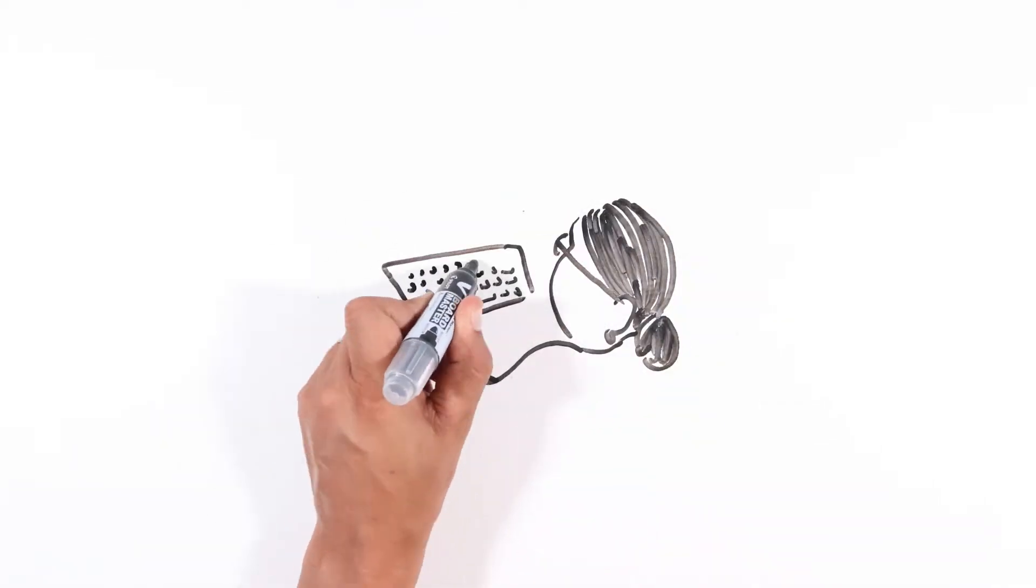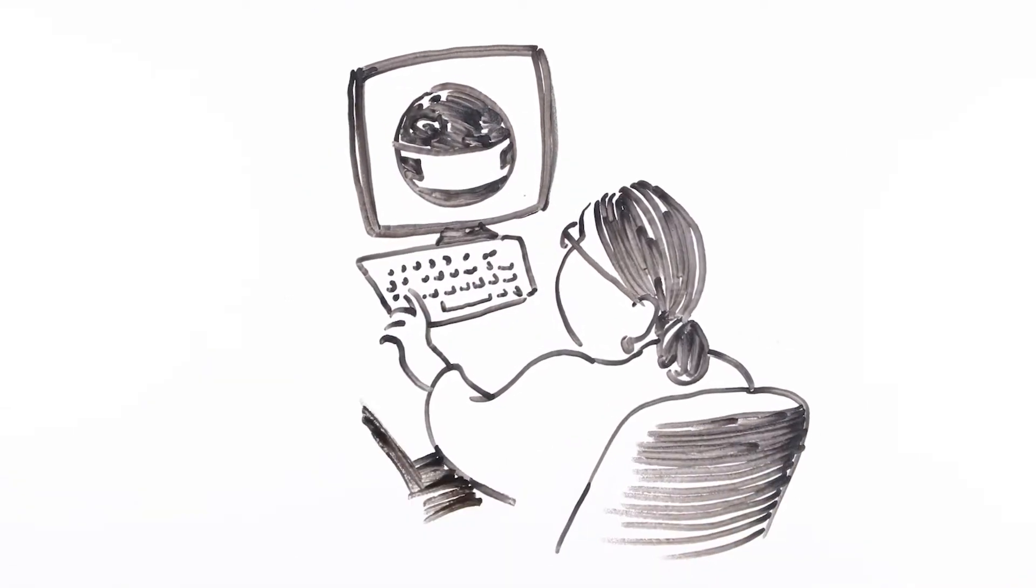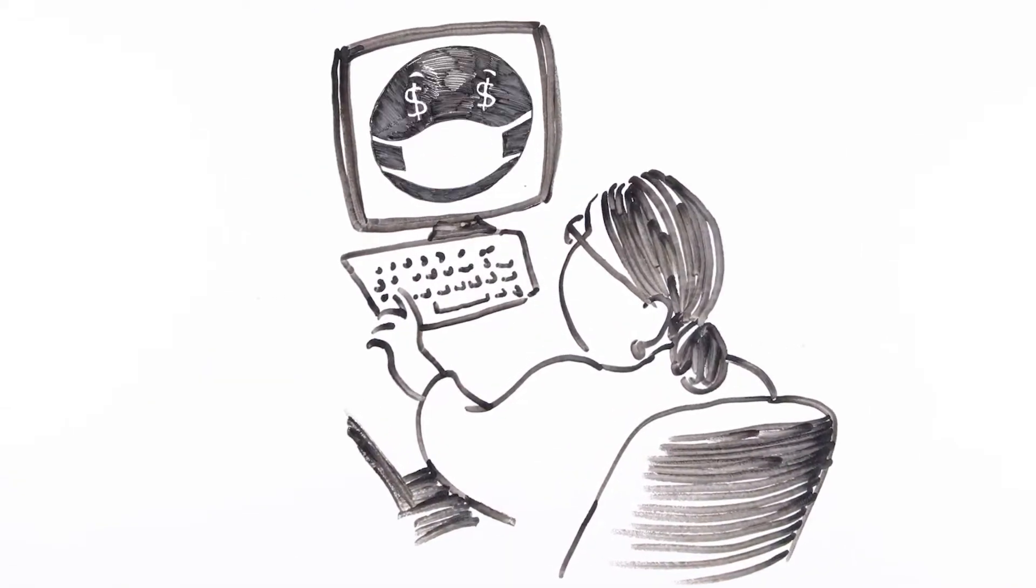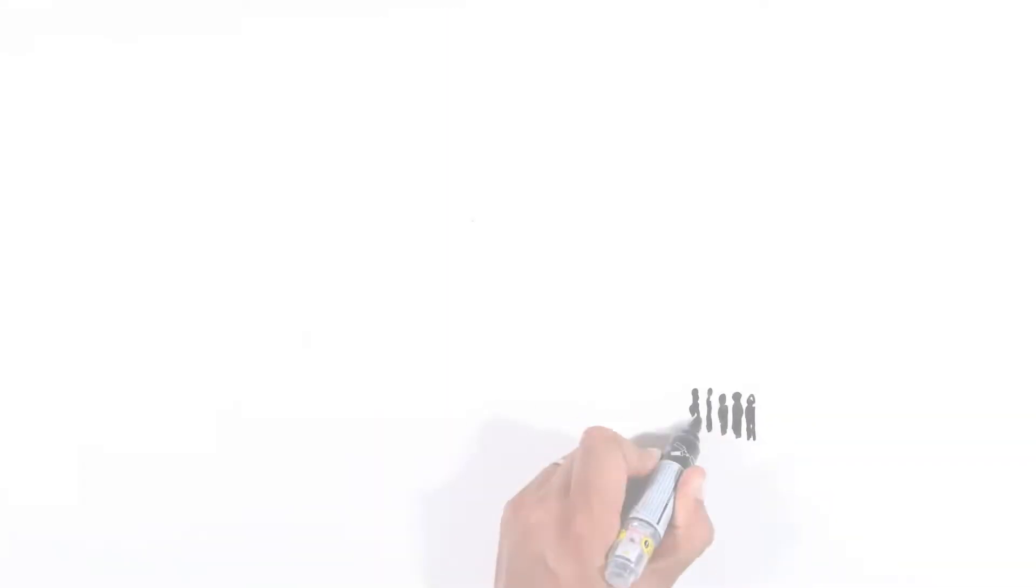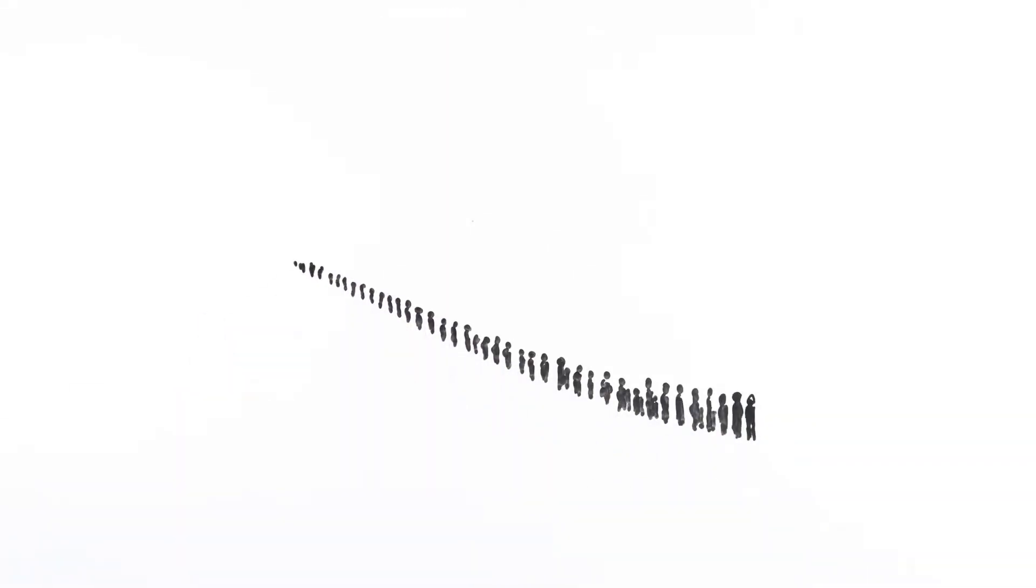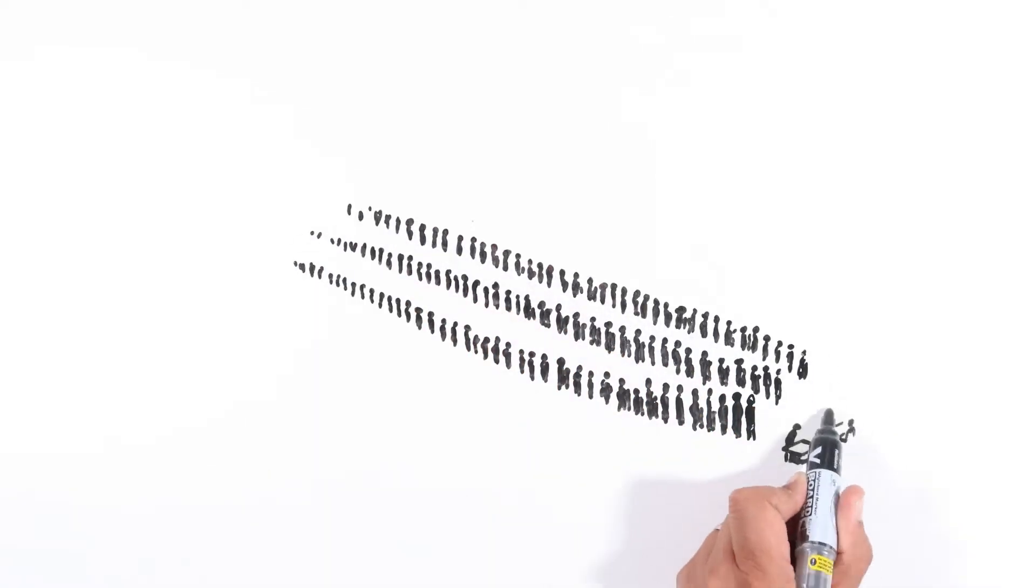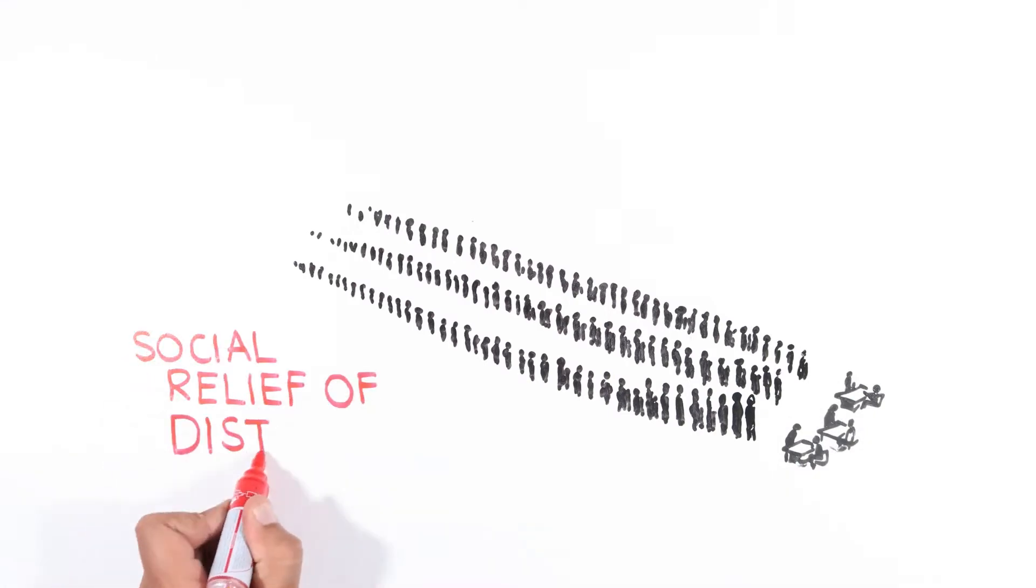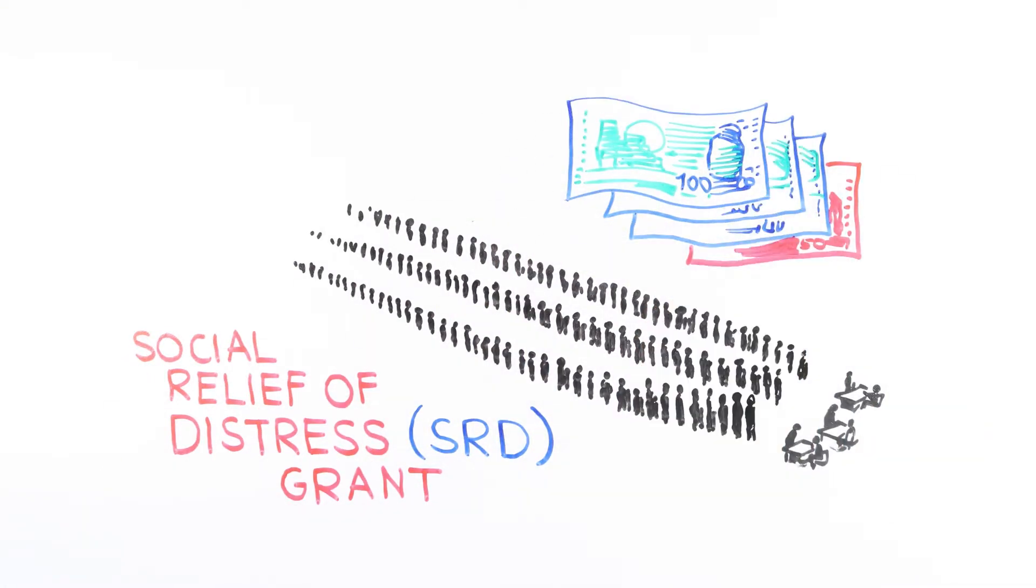Digital platforms now dominate everything in the modern world, from grocery shopping to applying for grants. To address some of the worst economic effects of COVID-19, President Cyril Ramaphosa announced a range of social assistance interventions in March 2020. This includes the R350 per month COVID-19 Social Relief of Distress, SRD grant.